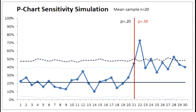We begin the simulation with a typical improvement team situation, starting with a process operating at very low reliability, about 20%. We've collected 20 data points, and then we've made a change in that process that's boosted the reliability to 50%. We're using a standard p-chart with baseline data on the first 20 data points, maintaining that mean, extending that mean into the future, and plotting the post-change data against that same mean.